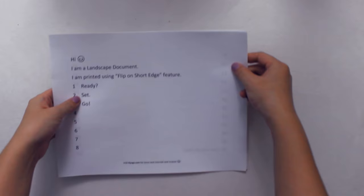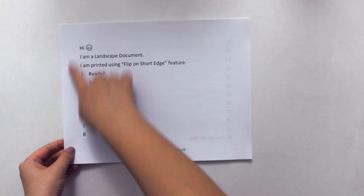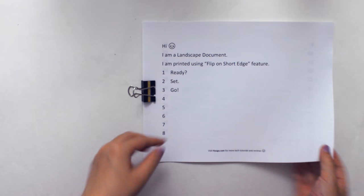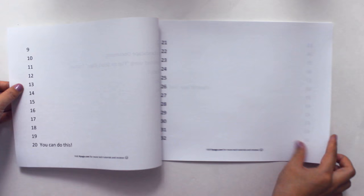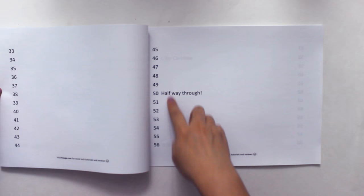This is what it looks like when we print using the flip on short edge function. So the flip direction tells us how we are going to view our next page.